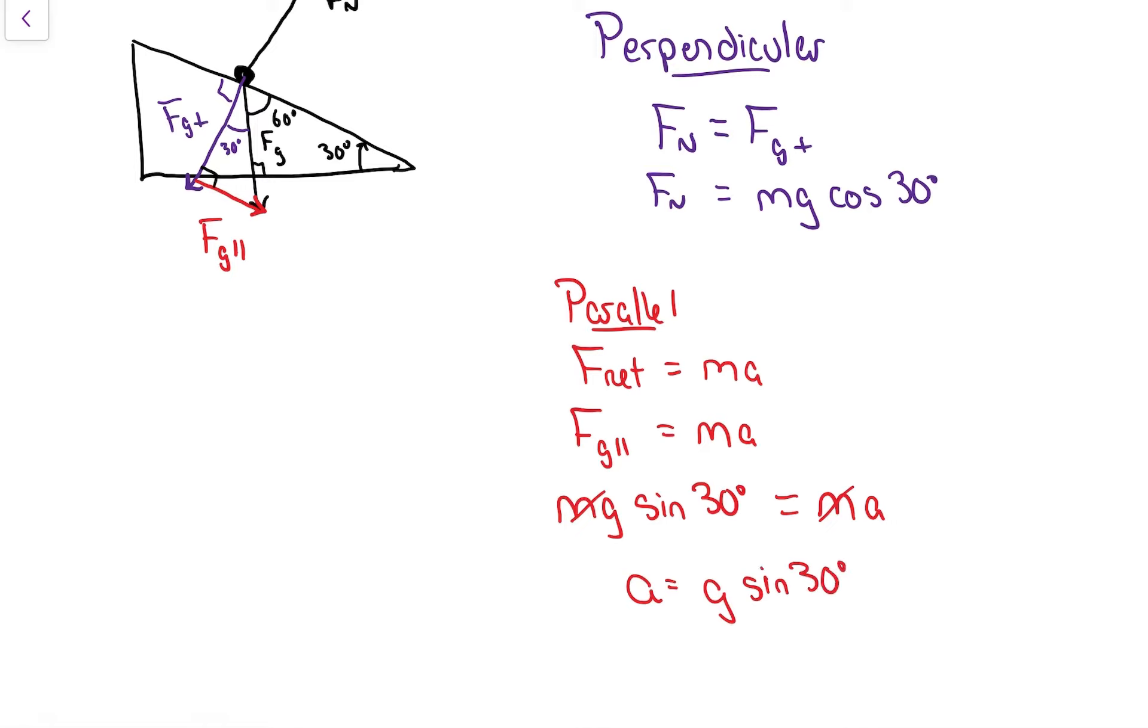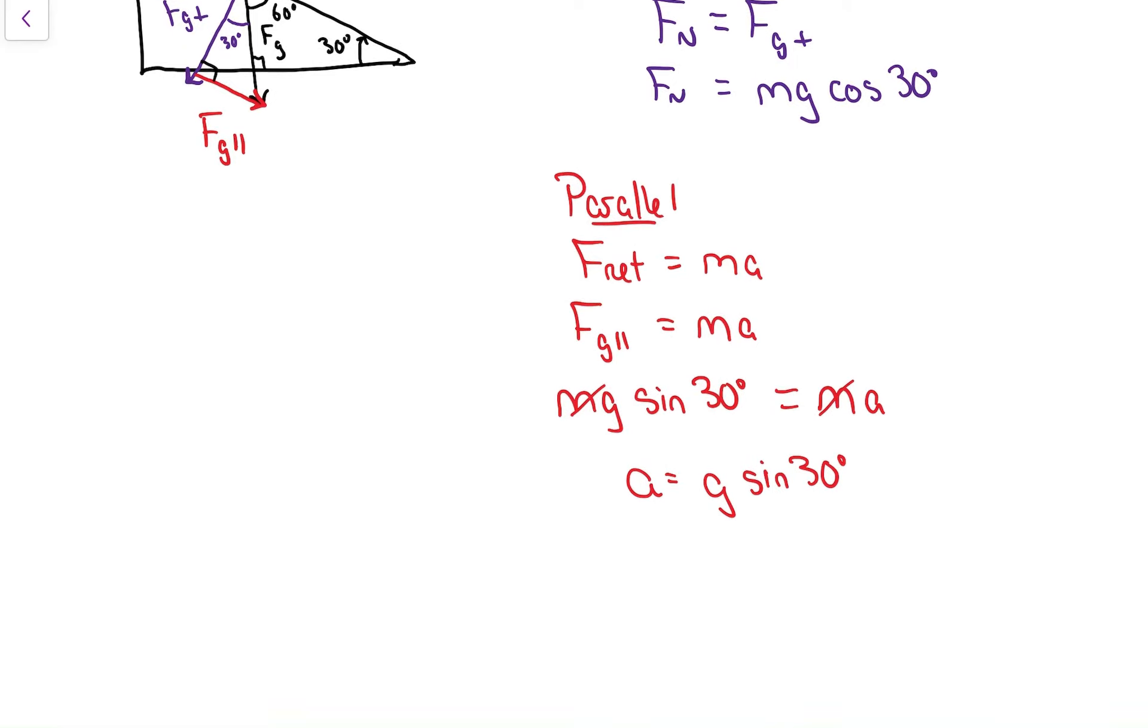If you get another question that's as simple as this, just a frictionless object on an incline, the acceleration is always going to be 9.8 multiplied by the sine of the angle. In this case, the nice 30 degree angle works out to be 4.9.